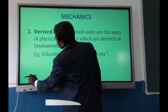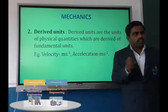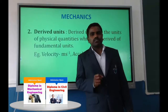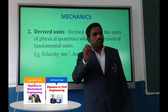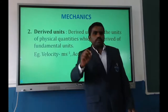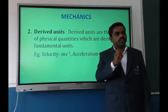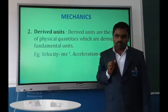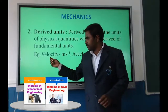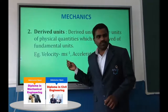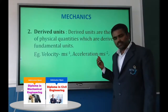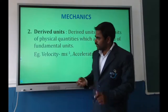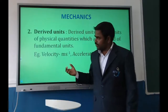Derived units are units of physical quantities which are derived from the fundamental units. For example, the unit of velocity is meter per second, and the unit of acceleration is meter per second squared. These are derived units.